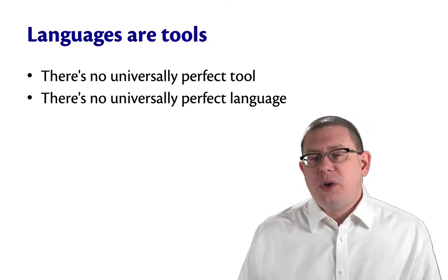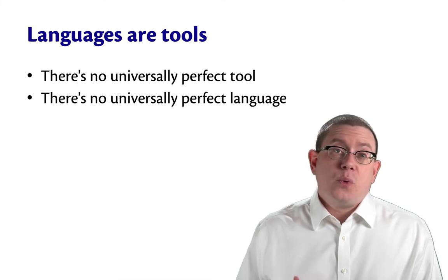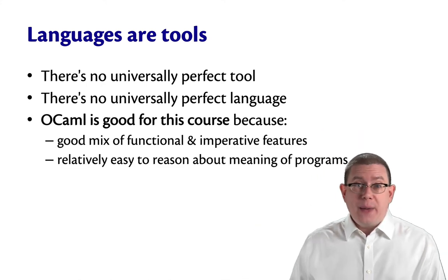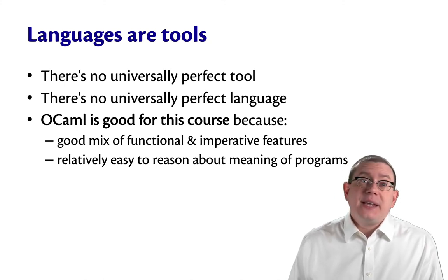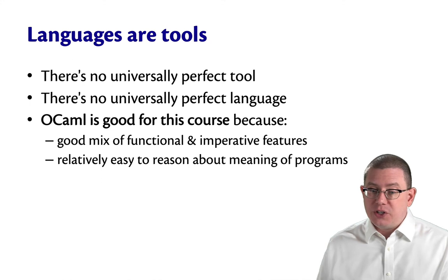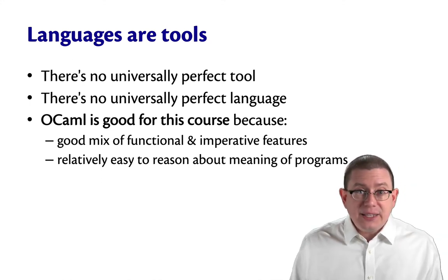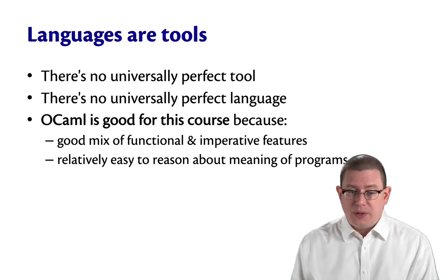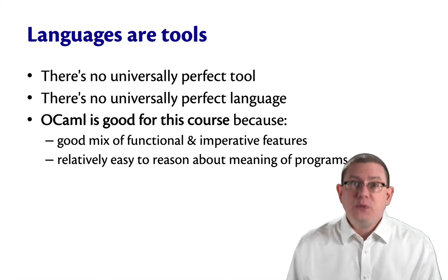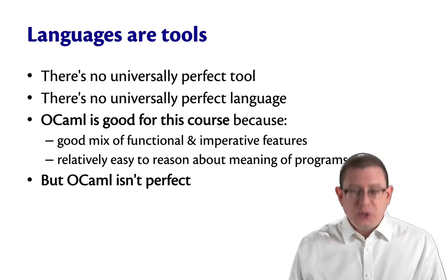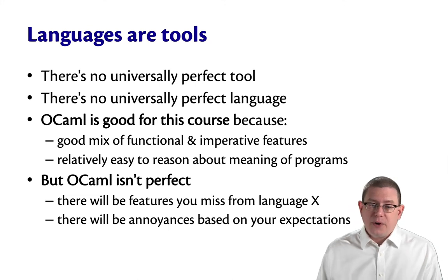There's no universally perfect tool — see how many pole arms got developed — and there's no universally perfect programming language. Please understand: although I enjoy programming in OCaml, I am not trying to tell you that it's perfect. OCaml happens to be good for this course because it has a good mixture of functional and imperative features. We will start off using it as a purely functional language, and then later in the semester incorporate some imperative features in isolated ways. It's relatively easy to reason about the meaning of programs in OCaml, and we will do proofs about programs this semester.